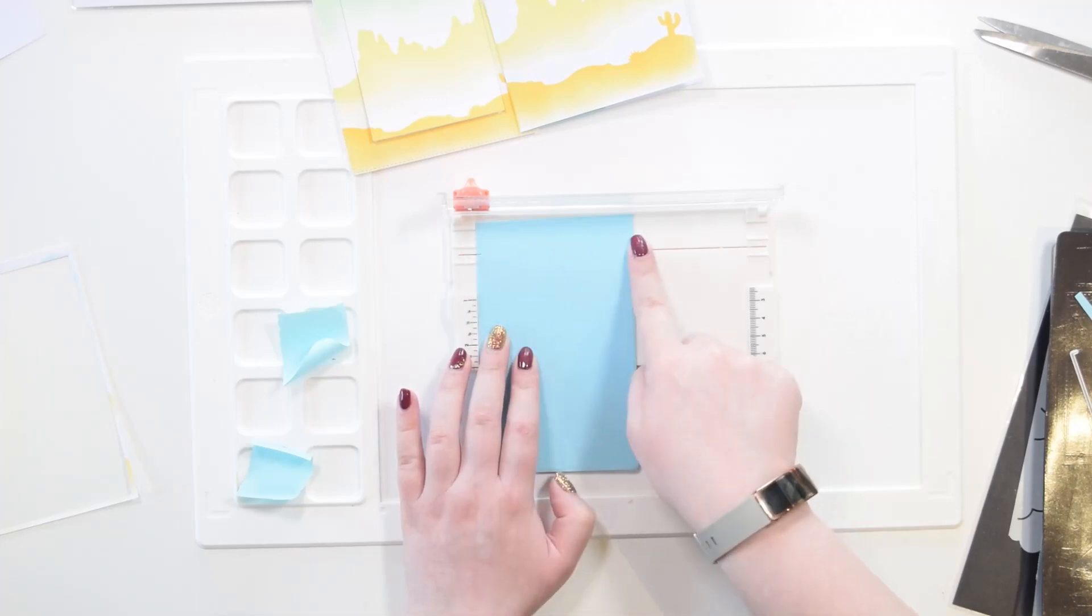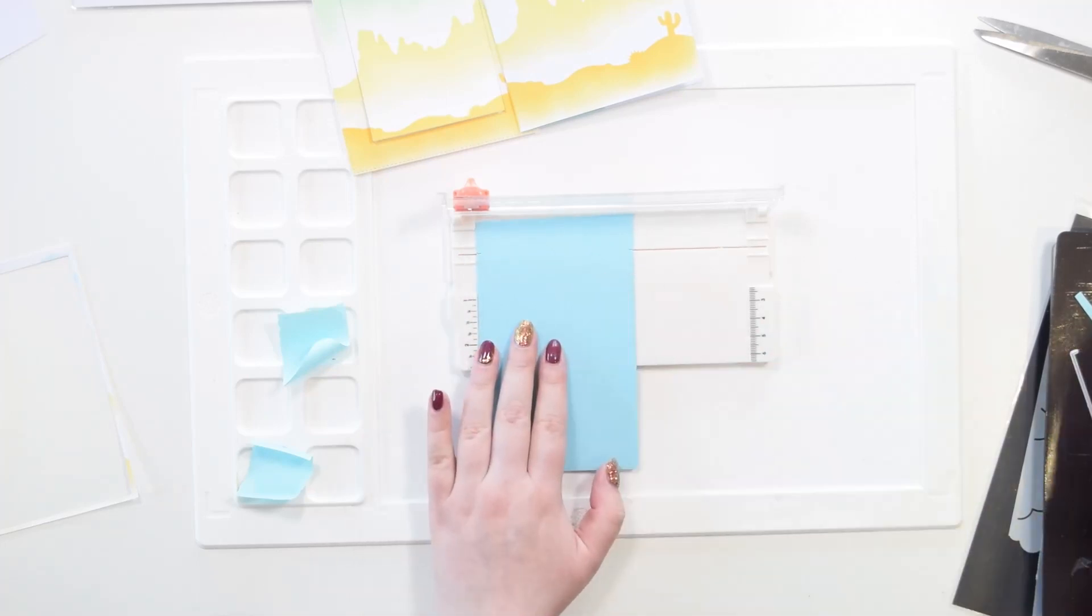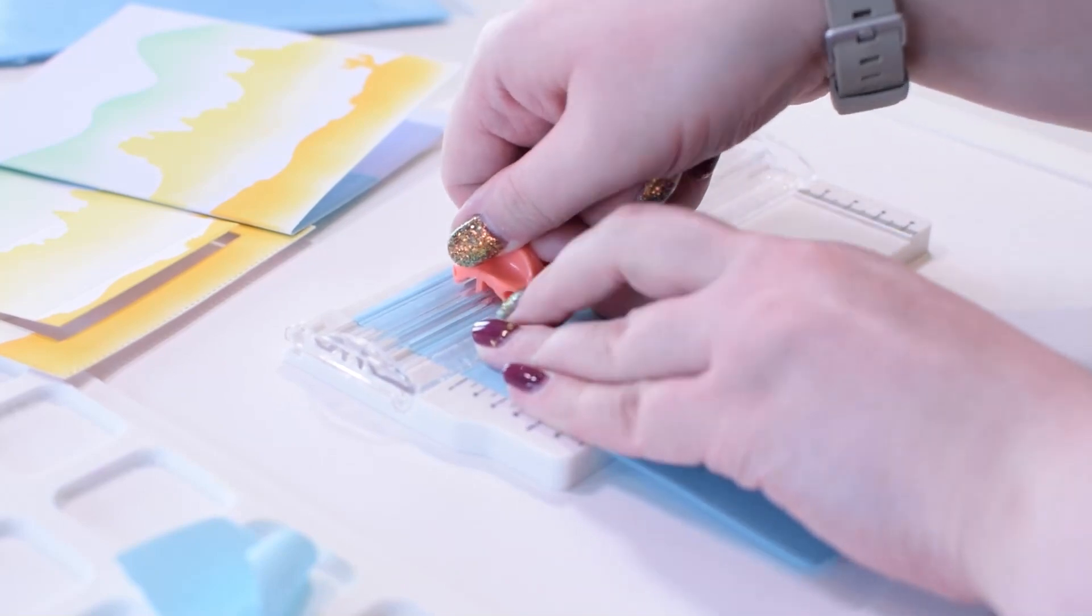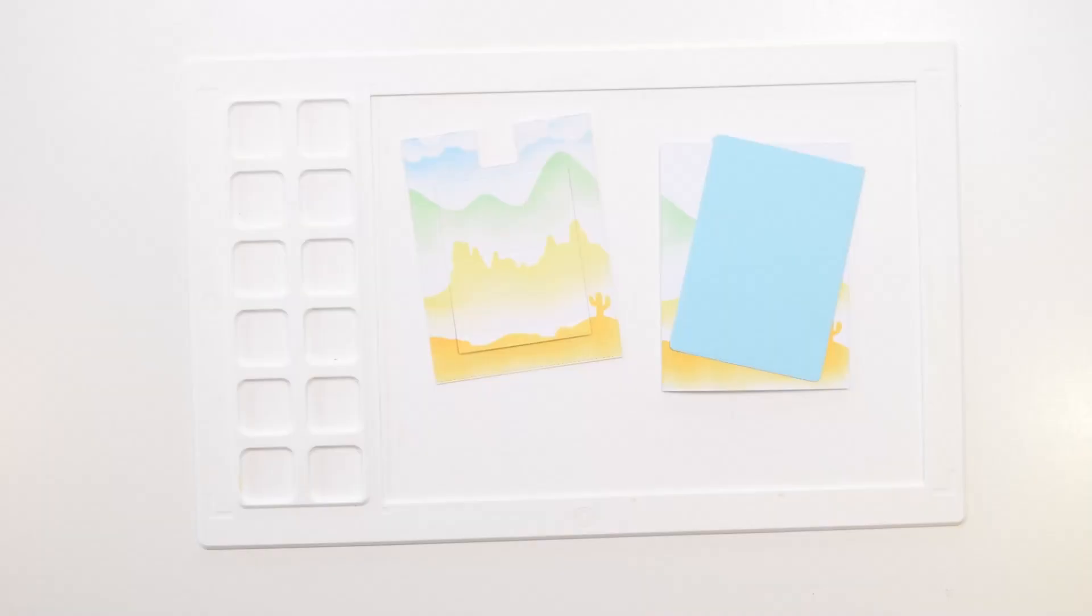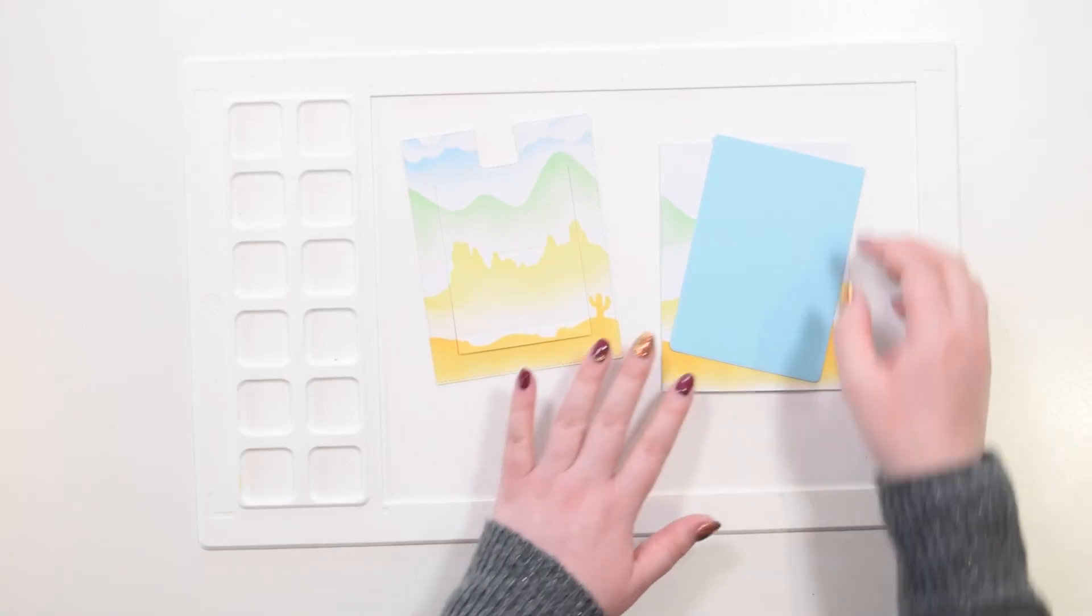Next we're going to trim where you see these small notches using a paper trimmer, because again we want this to be super straight. So you can see there's notches on the left and on the right, so I've lined this up with the cutting line on the paper trimmer. I've also made sure to butt this up against the edge so my paper is straight and will not move.